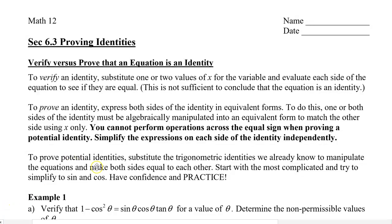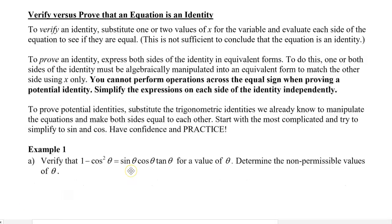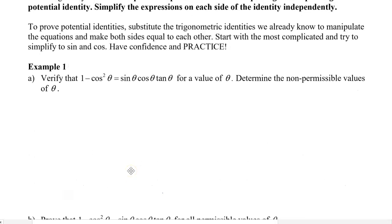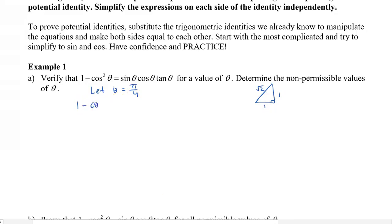Let's take a look at our first example. I want you to verify that one minus cos squared theta is equal to sine theta cos theta times tan theta. I can choose any value, so let's use pi over four because the pi over four special triangle is quite nice and easy to use. That's going to be root two, one and one. So we're going to substitute pi over four into the expression wherever you see theta.